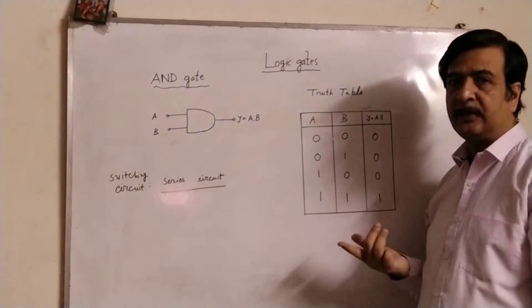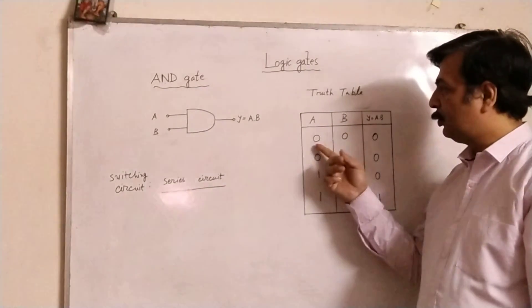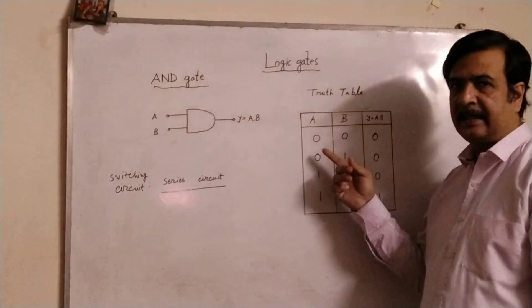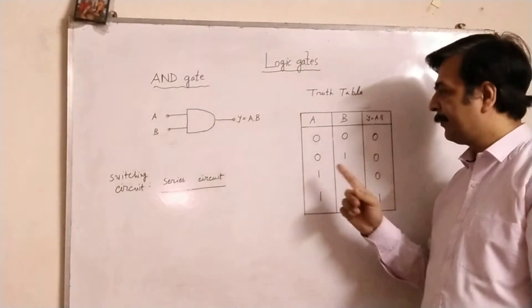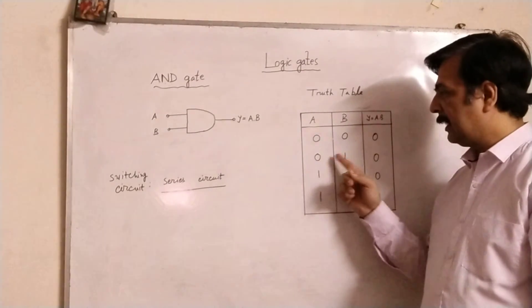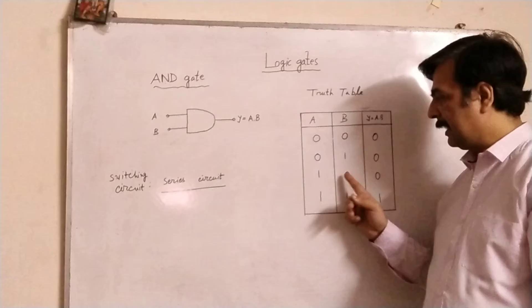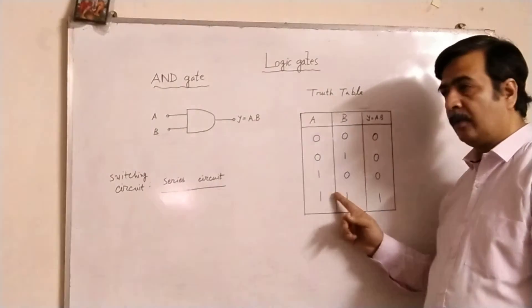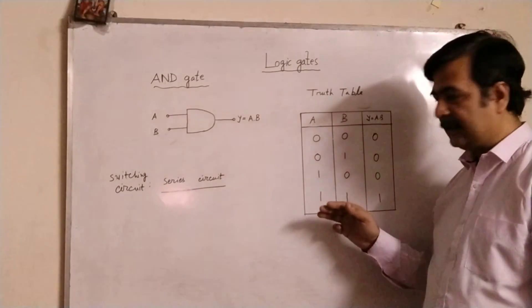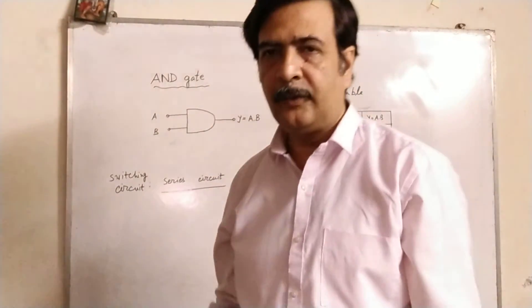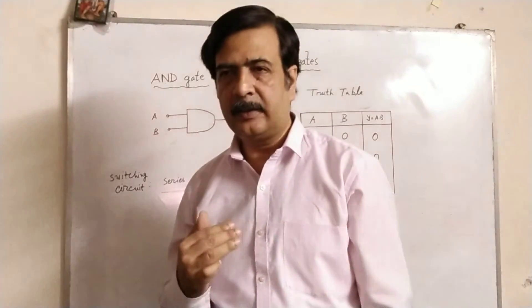In this way, if we think in series combination, what do we see? If the two appliances, for two appliances, switch is off, connection is off, totally off. One is off, another is on, totally off. One is on, another is off, totally off. Both are in series and both are on, so it is on.